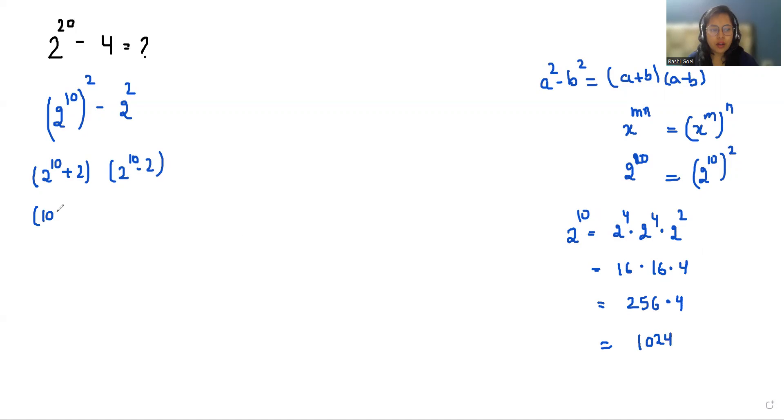So we can write it as 1024 plus 2 times 1024 minus 2. Now again we can use this identity a square minus b square equals a plus b times a minus b. So we can write it as 1024 plus 1024 square minus 2 square is 4.